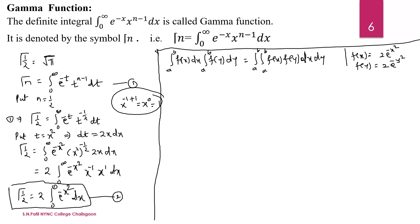Here, f(x) is 2 times e to the power minus x squared, and f(y) is 2 times e to the power minus y squared. So gamma of 1/2 from equation 2 equals 2 times the integral from 0 to infinity of e to the power minus y squared dy. Call this equation number 3.